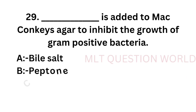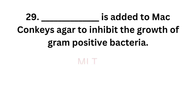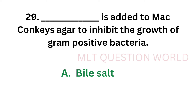Question number 29: Which substance is added to MacConkey agar to inhibit the growth of gram positive bacteria? Option A: Bile salt, option B: Peptone, option C: Neutral red, option D: Agar. The correct answer is option A, bile salt. Bile salt is added to MacConkey agar to inhibit the growth of gram positive bacteria.